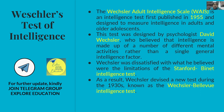The Weschler Adult Intelligence Scale, commonly known as WAIS, is an intelligence test first published in 1955. It was designed to measure intelligence in adults and older adolescents. These are important objective points — the name, the year 1955, and the target population of adults and older adolescents.